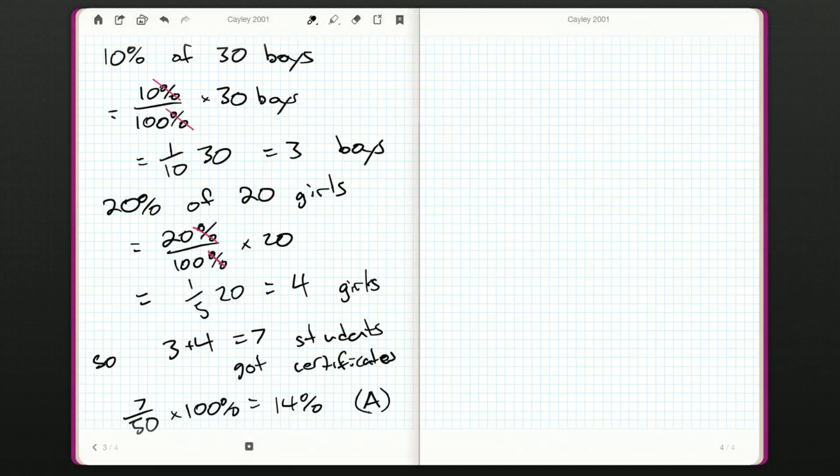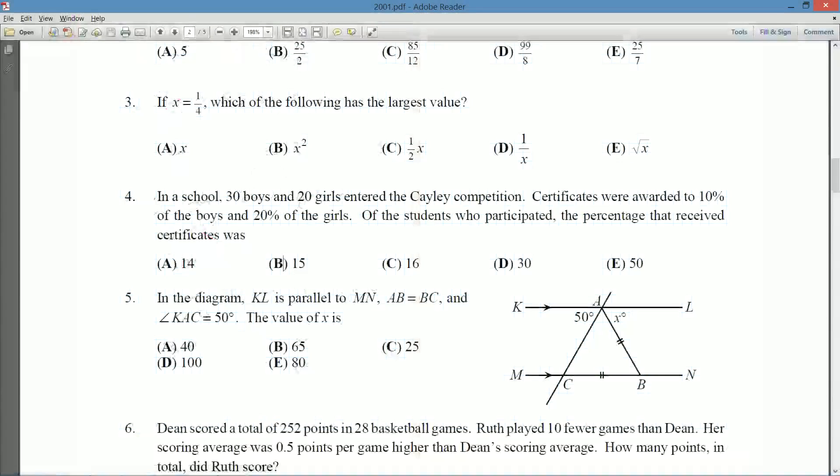All right. So that was a nice little question about percentages and fractions and finding a total one. The 14, we should expect something like 14, because in a sense, we're almost averaging 10 and 20. We're not averaging exactly, because we don't have an equal number of boys and girls. But we should expect to have a number greater than 10%, but less than 20%. Three of the answers were definitely in that range.